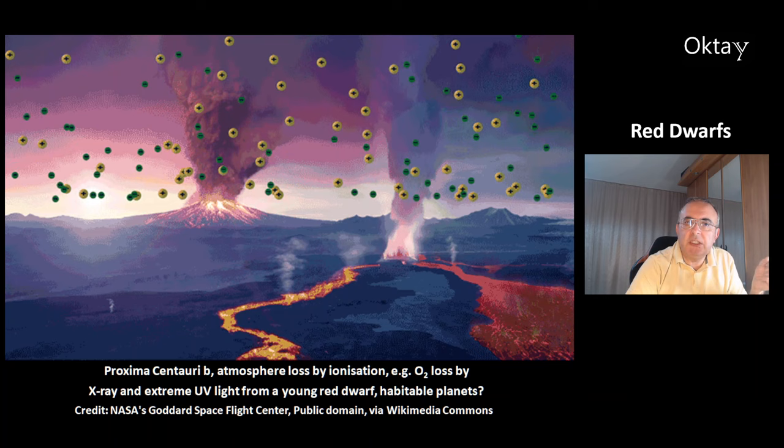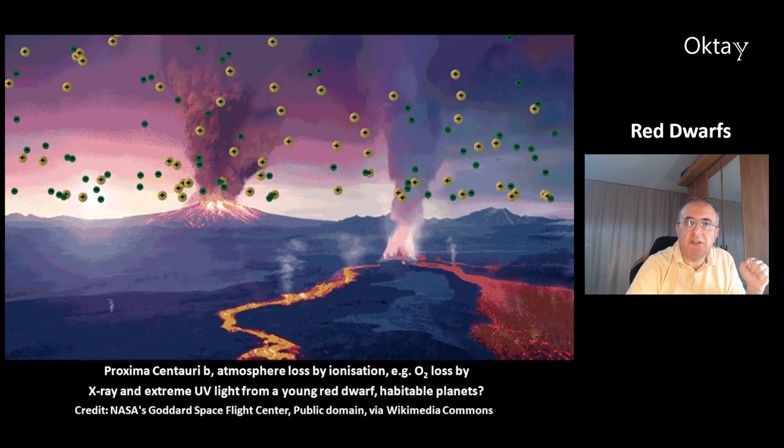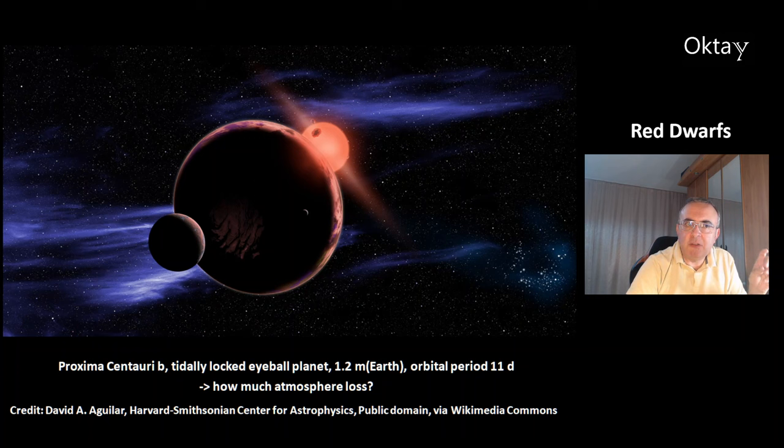The key question is: can these planets around red dwarfs be habitable or not? This is the best case scenario for how planet Proxima Centauri b could look. It's a tidally locked eyeball planet, with a permanent day side and a permanent night side with an ice cap. The mass of this planet is 1.2 Earth masses, and its orbital period is 11 days.